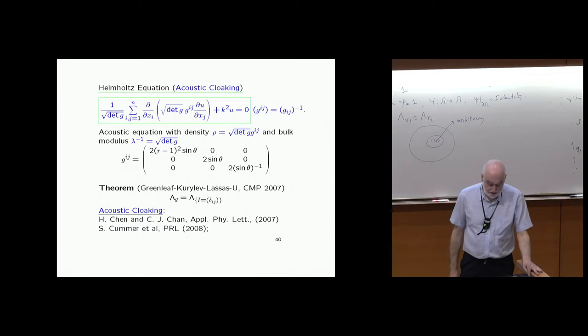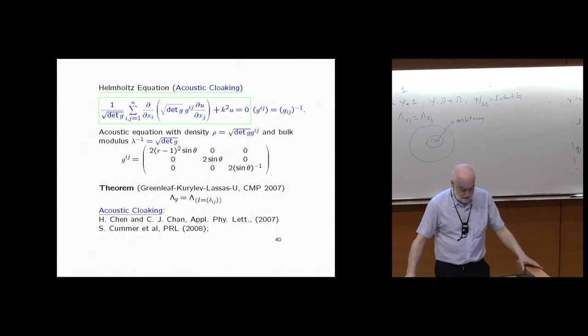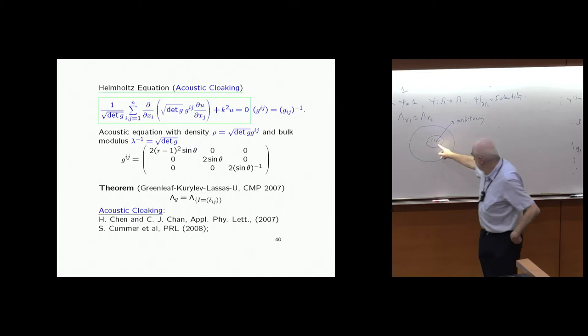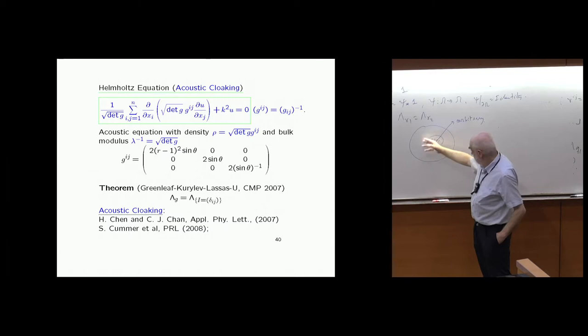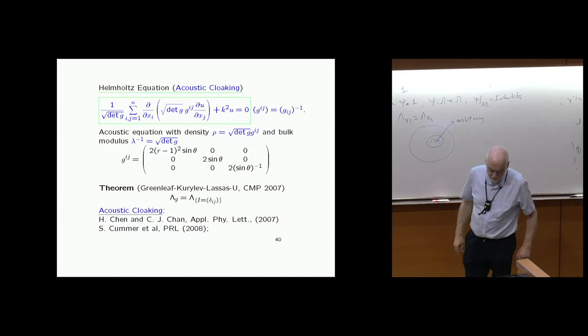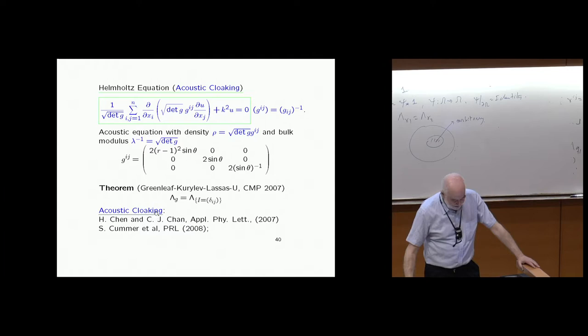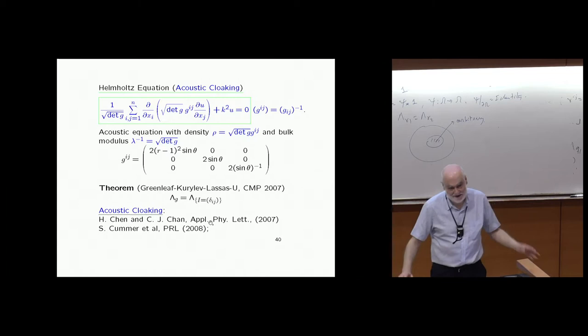You can have a perfect concert hall: the acoustic waves go around and don't penetrate, so whatever is inside doesn't go outside. Some physicists independently realized this — called acoustic cloaking — in Chen and Chan, though it's exactly the same construction. There is no difference.